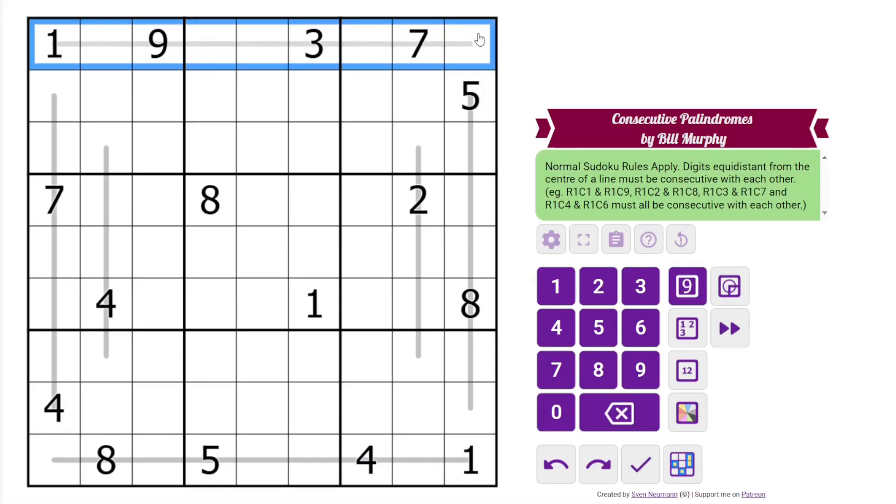We have normal Sudoku rules, 1 to 9 in each row, column, and 3 by 3 box. Additionally, we have some lines in the grid. These are obviously not traditional palindromes.